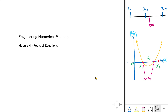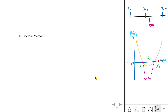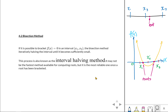Welcome to module number 4, Roots of Equations. We're going to discuss the second method, called the method of bisection. If it is possible to bracket f of x, or the function f at point x equals zero, in an interval x1 and x2, the bisection method iteratively halves the interval until it becomes sufficiently small.